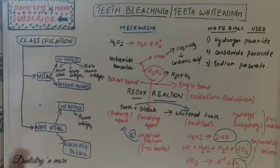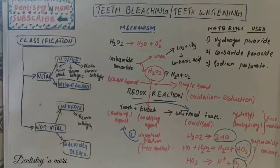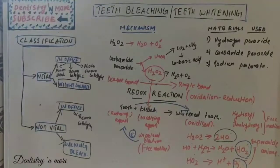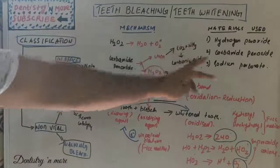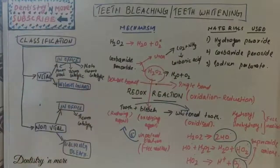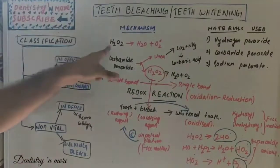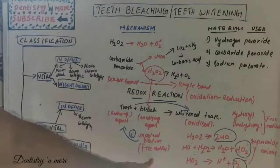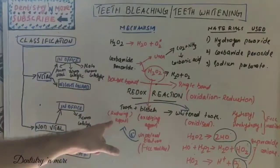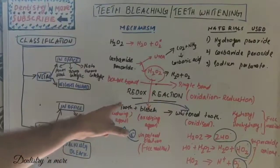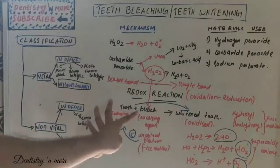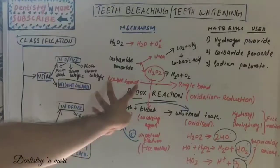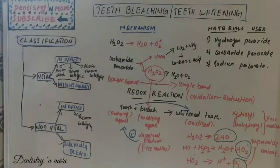On the tooth surface we have chromogenic pigments coming from intrinsic and extrinsic stains. Whether it is sodium perborate, carbamide peroxide, or hydrogen peroxide, all convert to free radicals with unpaired electrons. These free radicals donate electrons to the reducing agent — the tooth — and the chromogenic pigment with its double bond is oxidized, changing to a single bond.